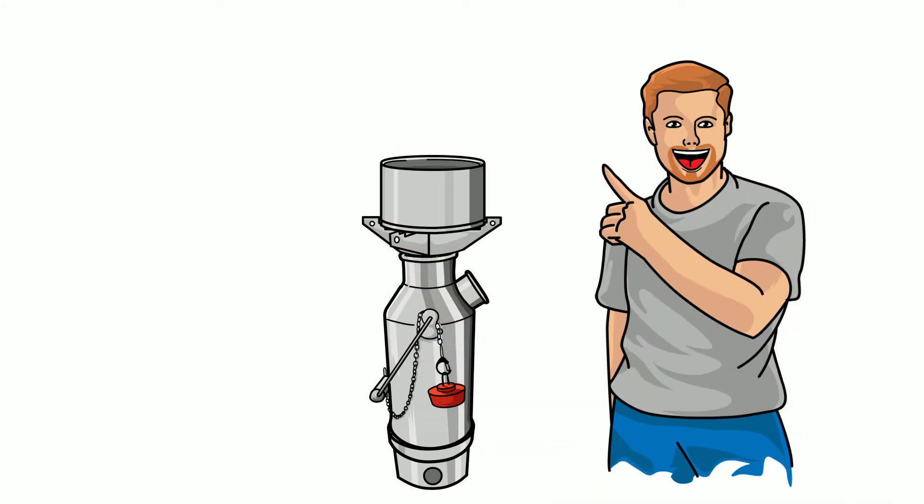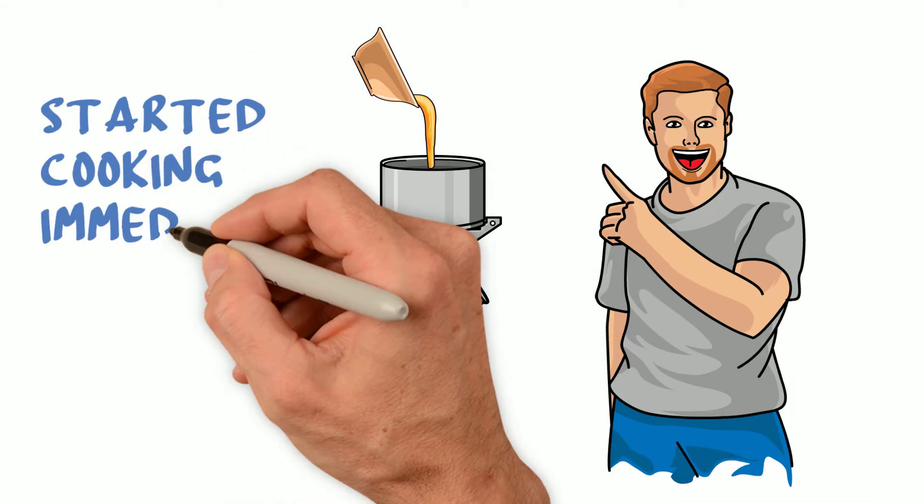He then placed the pot on the support and poured in a few eggs he had scrambled and started stirring. They started cooking immediately.